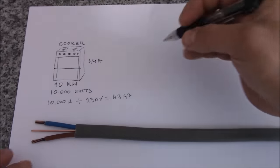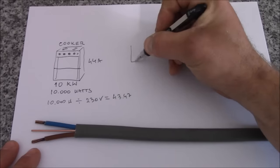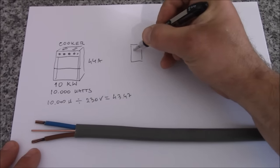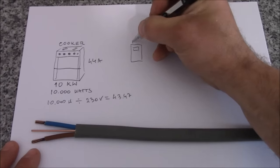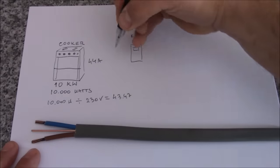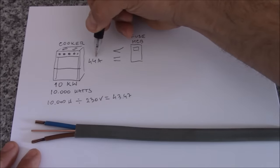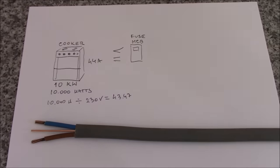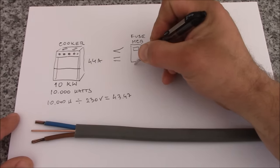So now we need to choose the circuit breaker or fuse. I'll draw it like this. So let's say this is the circuit breaker. And this has to be at least equal or bigger than the cooker. So we can install 45 amp fuse or MCB.